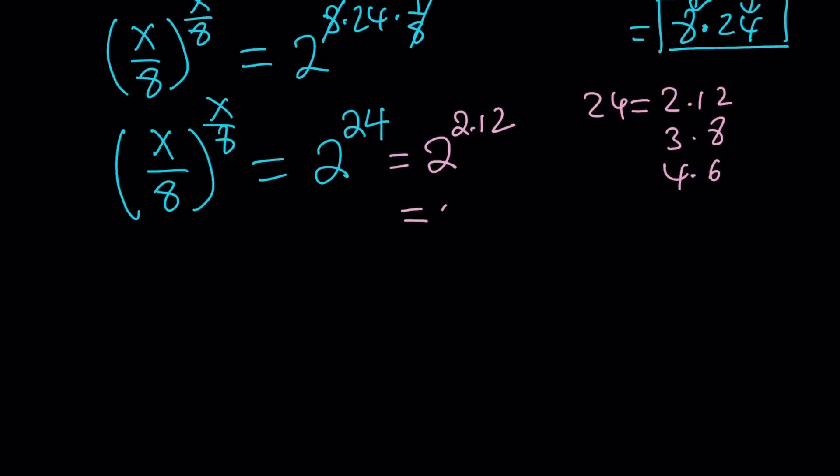Then this becomes 2 to the power of 2 to the power of 12, which is 4 to the power of 12. Obviously that's not something you want. So now let's try the second one, which is 2 to the power of 3 to the power of 8. And guess what? 2 to the power of 3 is 8.